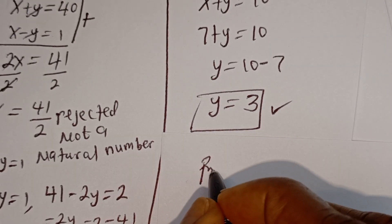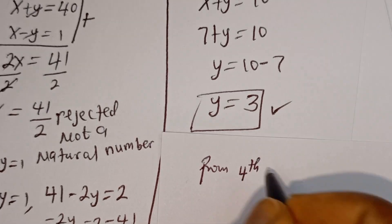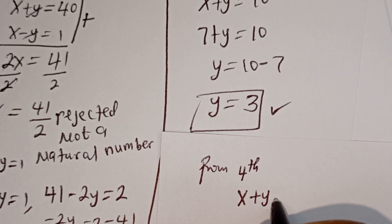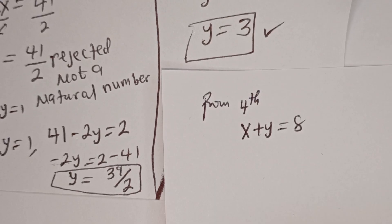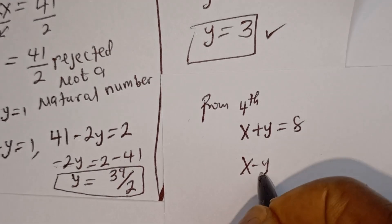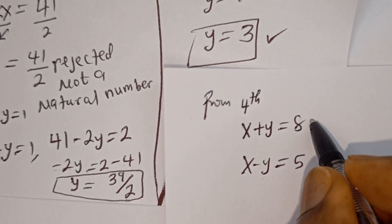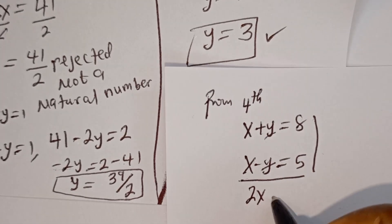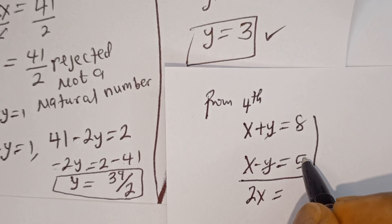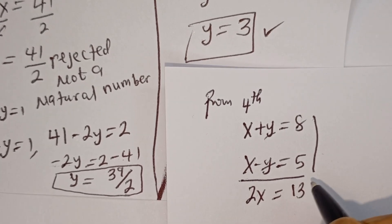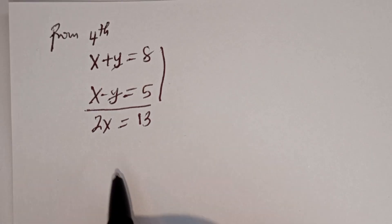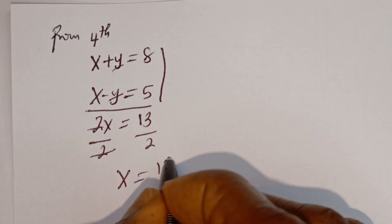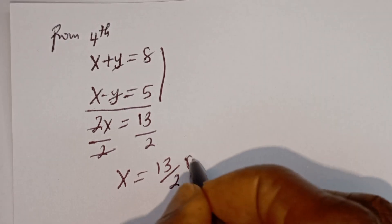For the fourth case: x plus y equals 8, and x minus y equals 5. Adding the two equations together, x plus x equals 8 plus 5, which is 13. Dividing both sides by 2, x equals 13 divided by 2. This is not a natural number, so this case is rejected.